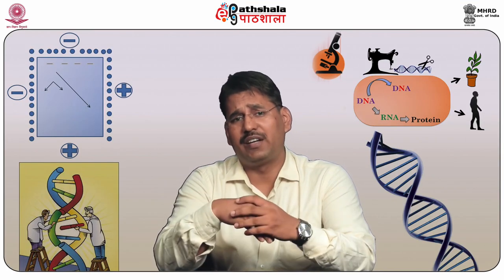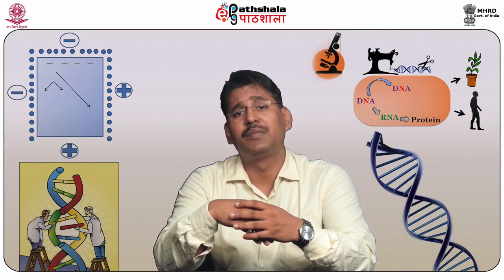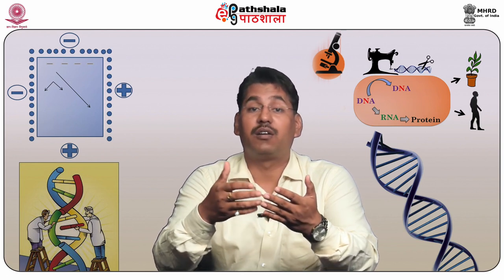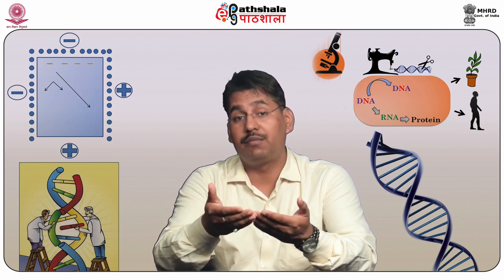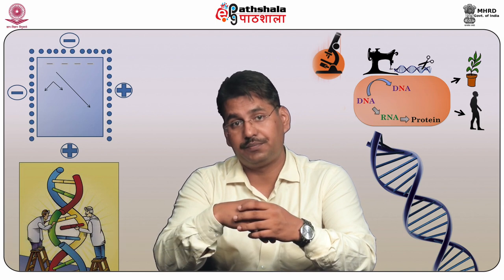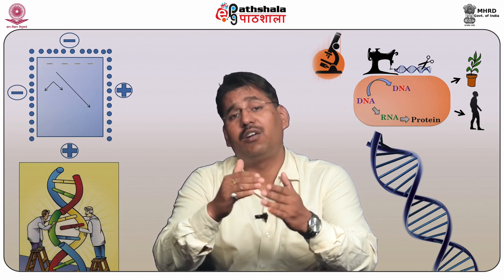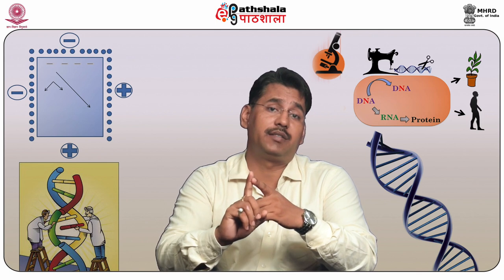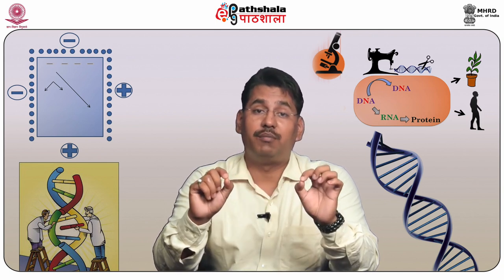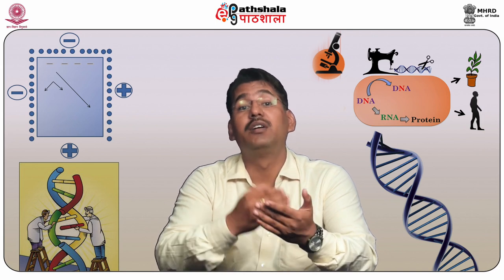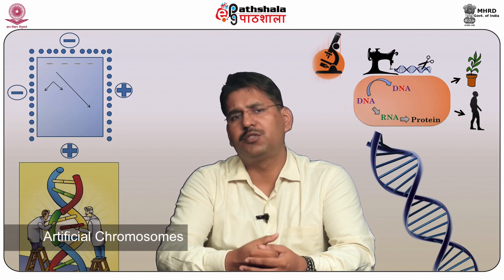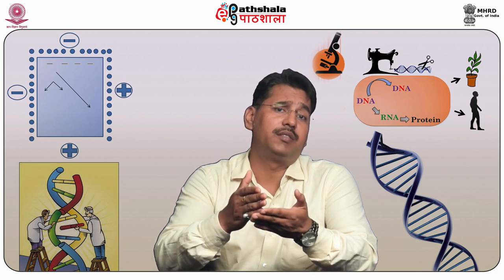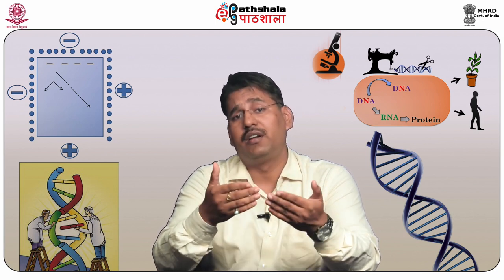High cloning capacity vectors are generally used for construction of genomic libraries. These include cosmids, bacterial artificial chromosomes, P1-derived chromosomes, and yeast artificial chromosomes. They are designed to handle longer DNA inserts much larger than lambda replacement vectors, so they require a lower number of recombinants to be screened for identification of a particular gene of interest. Artificial chromosomes are DNA molecules assembled in vitro from defined constituents that can function like natural chromosomes.